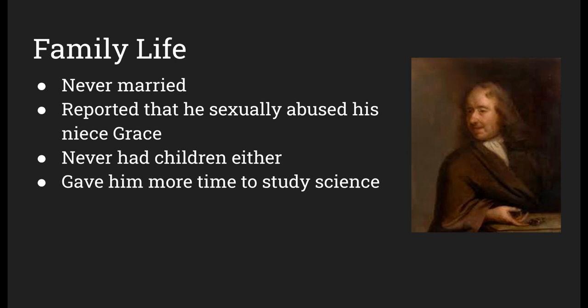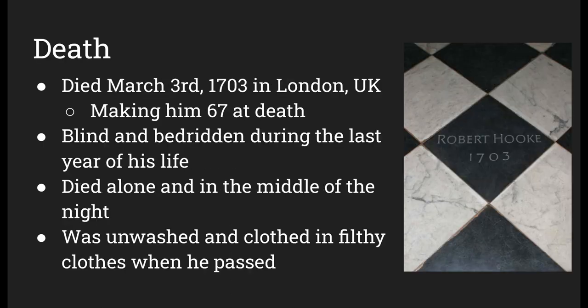As for his family life, he was never married, and it is reported that he sexually abused his niece, Grace. He never had any children. He died on March 3rd, 1703, in London, United Kingdom, at age 67. He had a very hard last year of life — he was blind and bedridden, his legs were giving out, and he died alone in the middle of the night. Apparently he was also unwashed and clothed in filthy clothes when he passed away. On the right is a tile at Westminster School attributed to him.